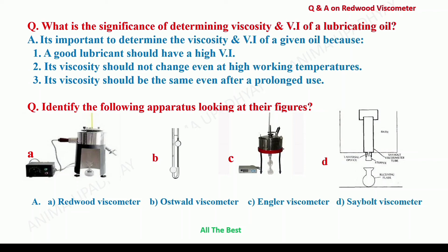Can you identify the apparatus looking at their images A, B, C, and D? A is Redwood Viscometer, identified by the collecting flask which is a small flask of around 50 ml capacity. B is Oswald Viscometer, which is a capillary viscometer made up of glass. C is Angler Viscometer — look at the collection flask, which is double-bulbed. D is Sebald Viscometer, where the collection flask is larger at 60 ml capacity and the mouth is shaped into a funnel.